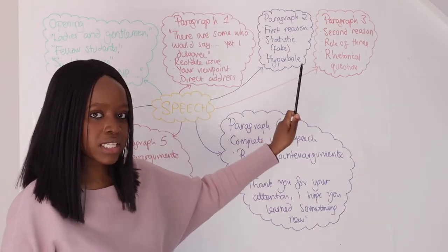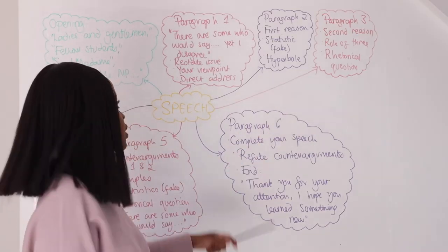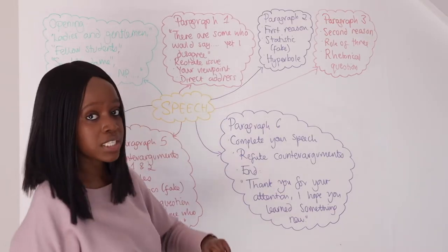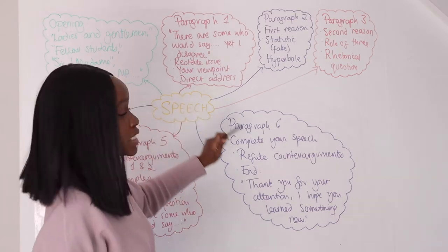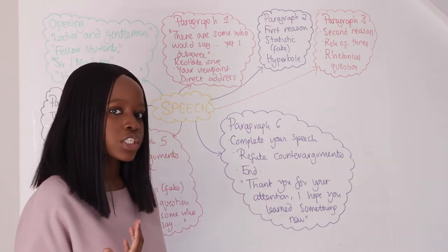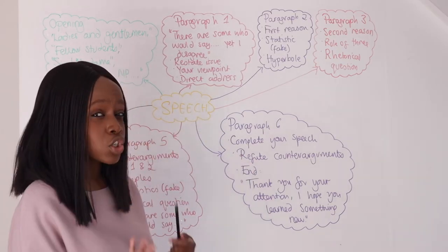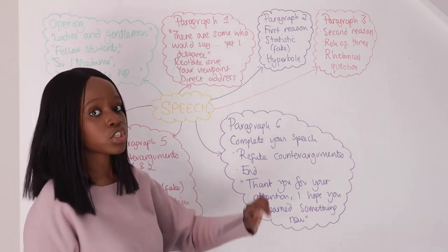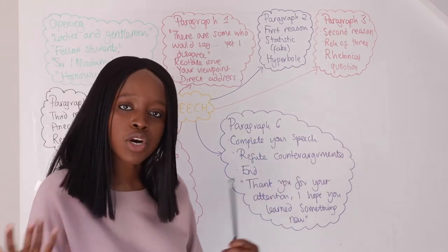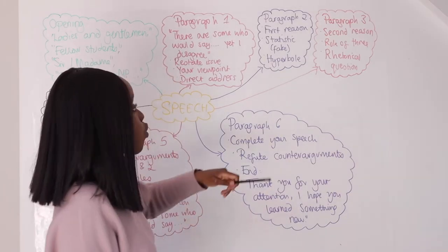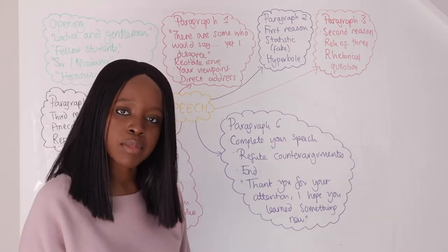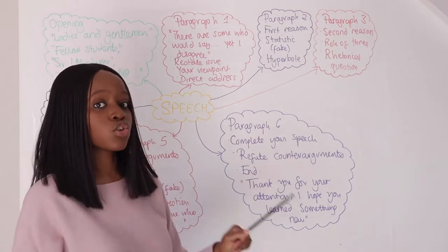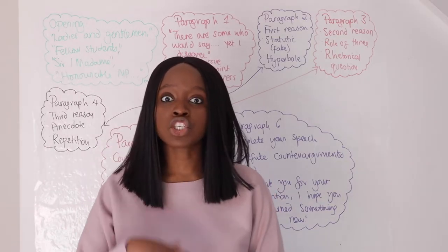Going back to our example — 'climate change is not a big deal, write a speech for or against this perspective' — let's argue that you disagree and believe climate change is a big deal. In your first paragraph, I would suggest starting with 'There are some people who would say that climate change is not a big deal, yet I would disagree.' You restate the issue, explain briefly why you disagree, and state your viewpoint.